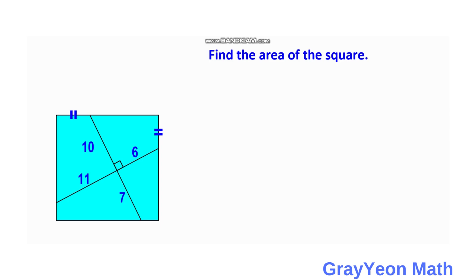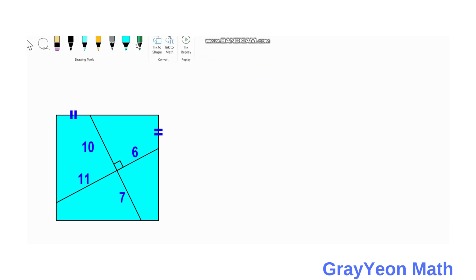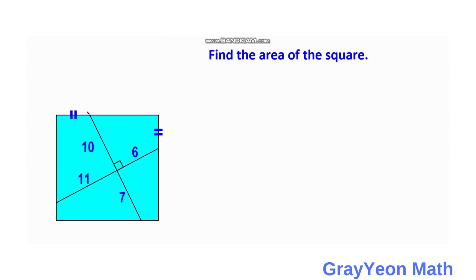First, we need to draw a line from this segment, continuing it with the same inclination, and a perpendicular line from this point to that point until they intersect. We actually form a right triangle and an angle. Similarly, we draw a horizontal line and continue it until they intersect, again forming a right angle and this angle.